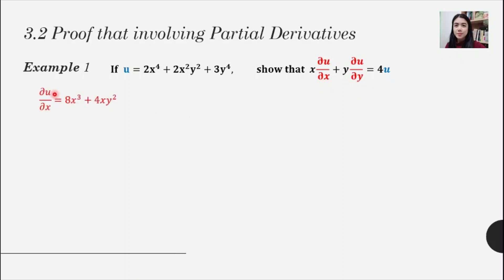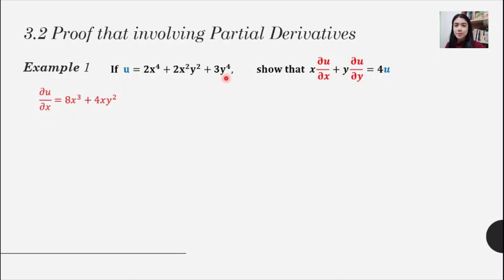For del u/del x, we differentiate with respect to x, so we focus on x only. Differentiating gives us 8x cubed. For the x squared term, differentiating x squared gives 2x, multiplied with the constant 2y squared, giving 4xy squared. The remaining term has only y, which is a constant, so differentiating gives zero.